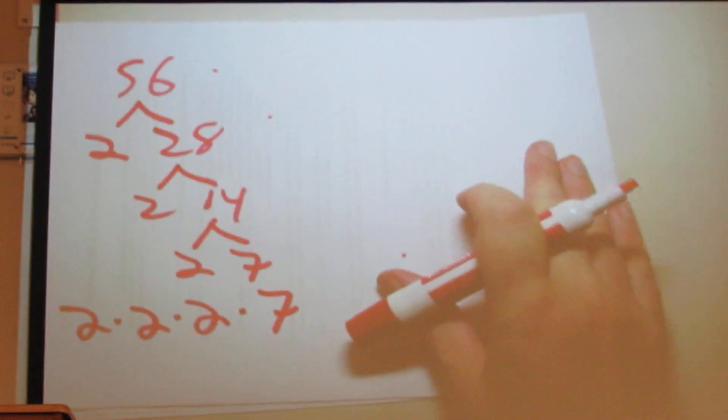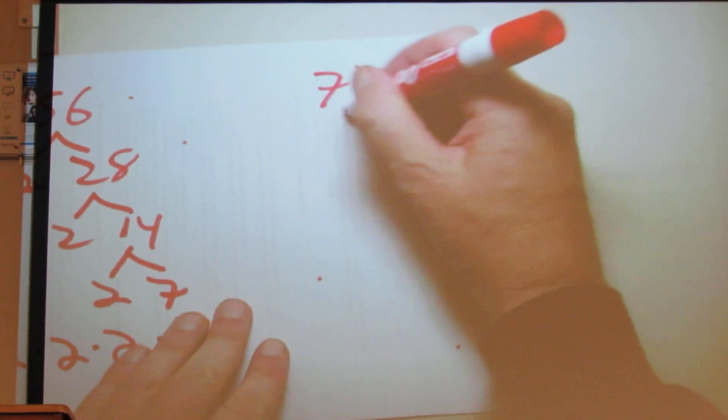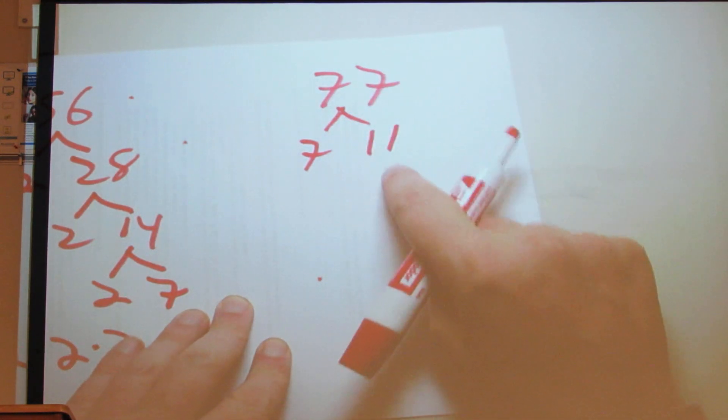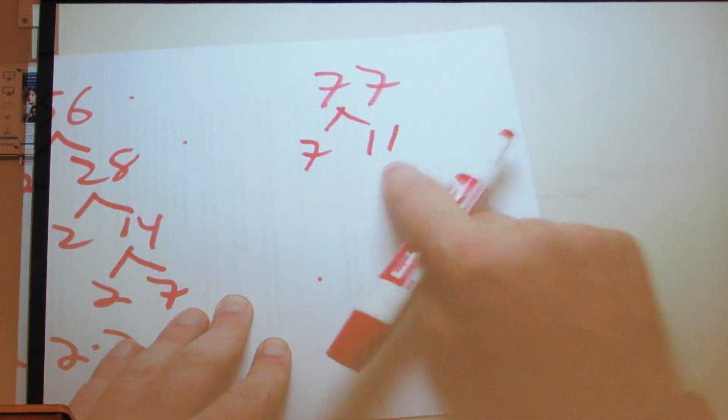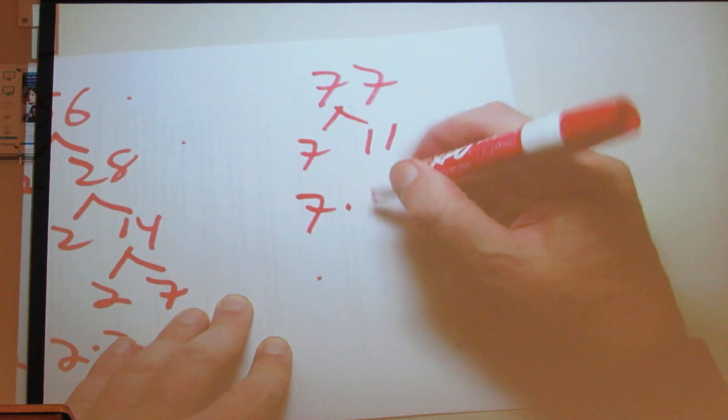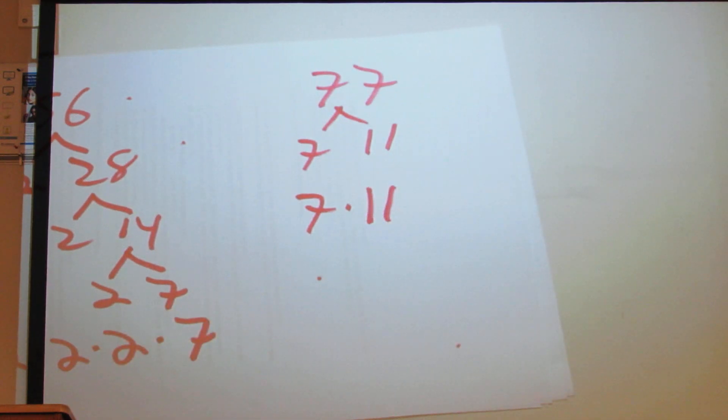You're going to get another one — let's say it's 77. 2 won't go into that, neither will 3, neither will 5, but 7 will and it will go 11 times. 11 is a prime number, so the answer would be 7 times 11.